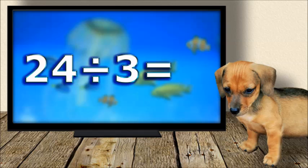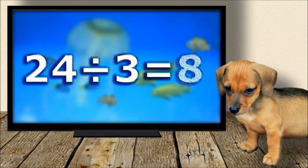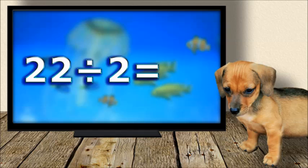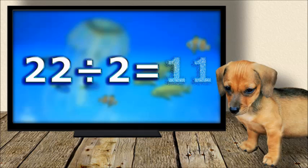Twenty-four divided by three equals eight. Twenty-two divided by two equals eleven.